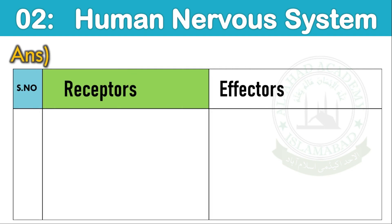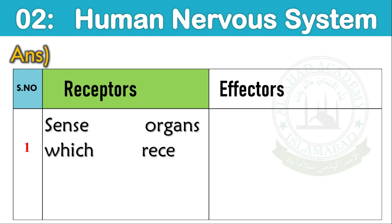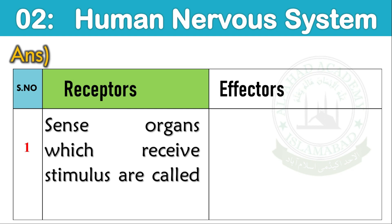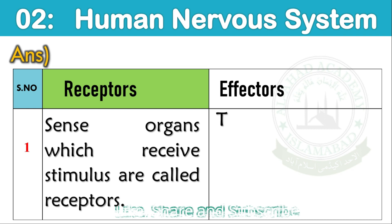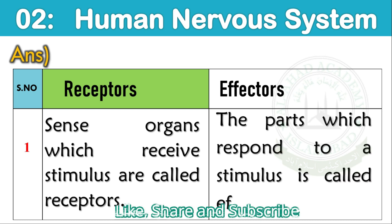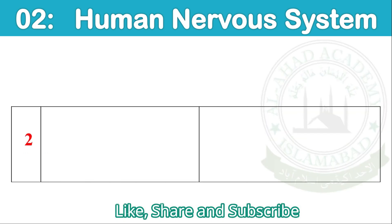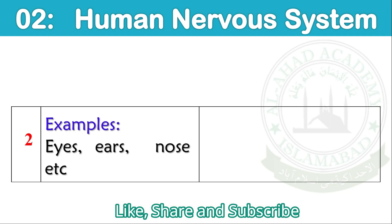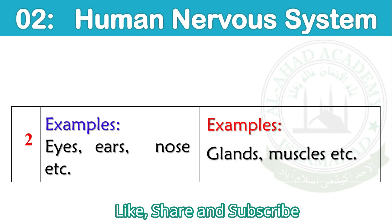Receptors and Effectors: Sense organs which receive a stimulus are called Receptors. Examples: eyes, ears, nose, etc. The parts which respond to a stimulus are called Effectors. Examples: glands, muscles, etc.